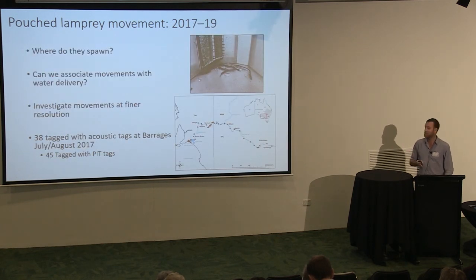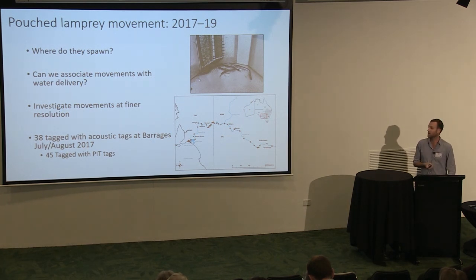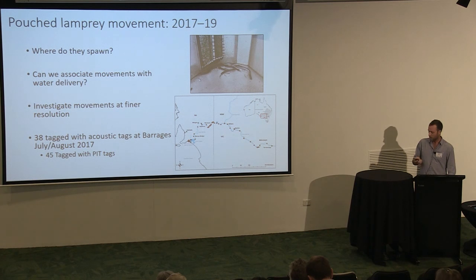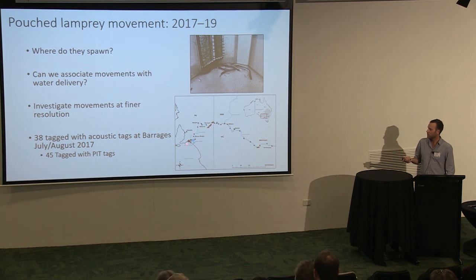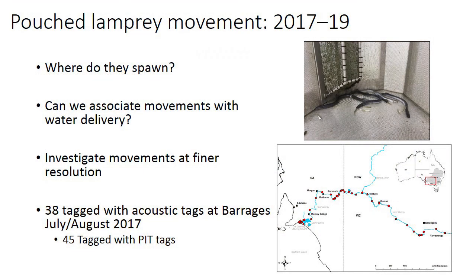We still had many questions about lamprey migration, so we chose to replicate that study at higher resolution using acoustic telemetry, and we're doing that right now. In collaboration with Victorian and New South Wales researchers, we've established an array of receivers from the Murray barrages all the way to Yarrawonga, including some significant tributaries. Thus far this winter we've tagged 38 adult pouched lamprey with acoustic tags, and a few have already passed through the lakes and are moving up into the river on their upstream migrations.